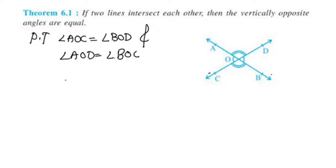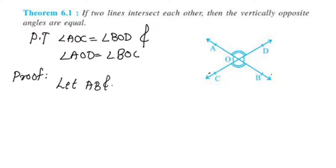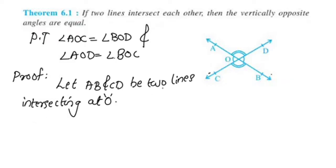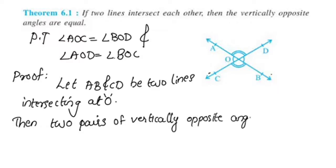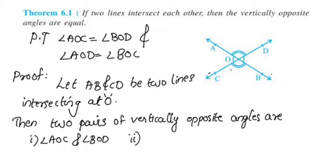Let the two lines intersect each other. Let AB and CD be two lines intersecting at O. Now we have two pairs of vertically opposite angles. The first pair is AOC and BOD. The second pair is angle AOD and angle BOC.